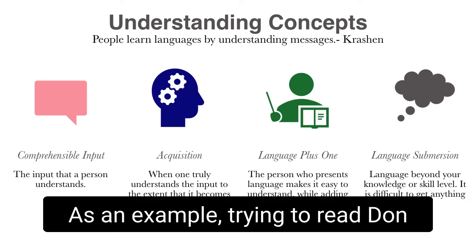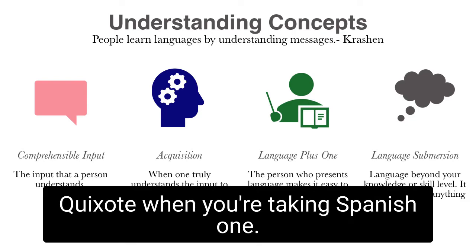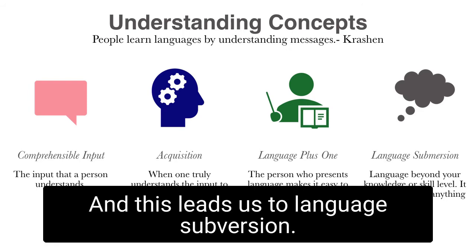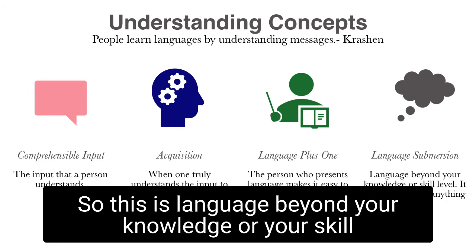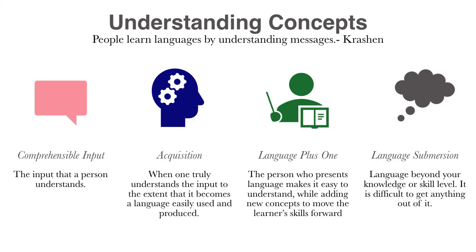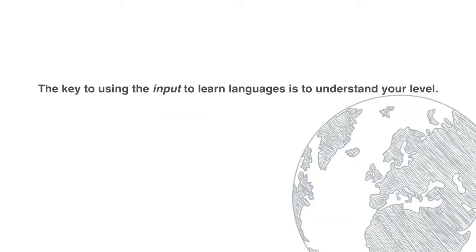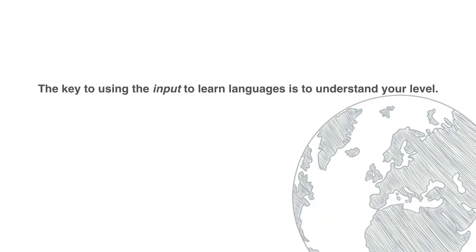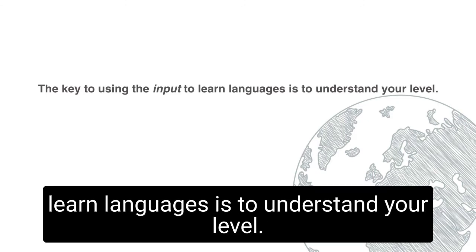As an example of what to avoid: trying to read Don Quixote when you're taking Spanish 1. This leads us to language submersion — language beyond your knowledge or skill level — and it's difficult to get anything out of it. The key to using input to learn languages is to understand your level.